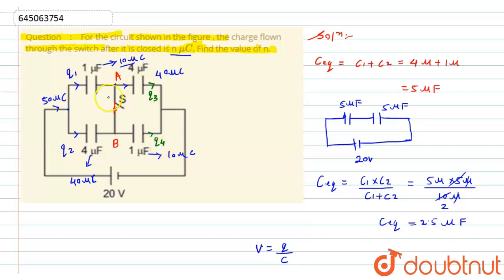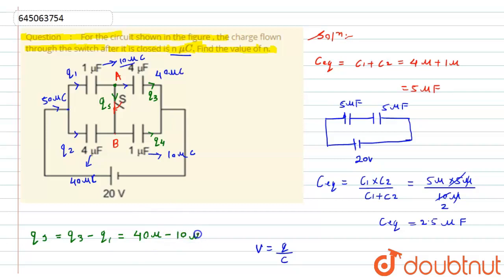According to the question, we need to find the charge flowing through the switch. Considering the junction point A, the charge coming in is Q1 and the charge going out is Q3. Therefore, the charge flowing through the switch, Qs = Q3 − Q1 = 40 μC − 10 μC = 30 μC.